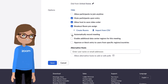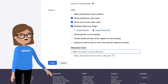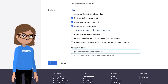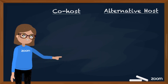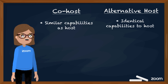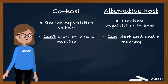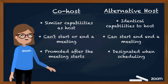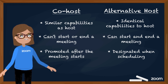Licensed users within the same account will see an option to assign alternative hosts for the meeting. Co-hosts are different than alternative hosts — co-hosts have a lot of the same capabilities, but they can't start or end the meeting like an alternative host can. Also, a co-host can't be designated when scheduling the meeting; they can only be promoted after the meeting starts.